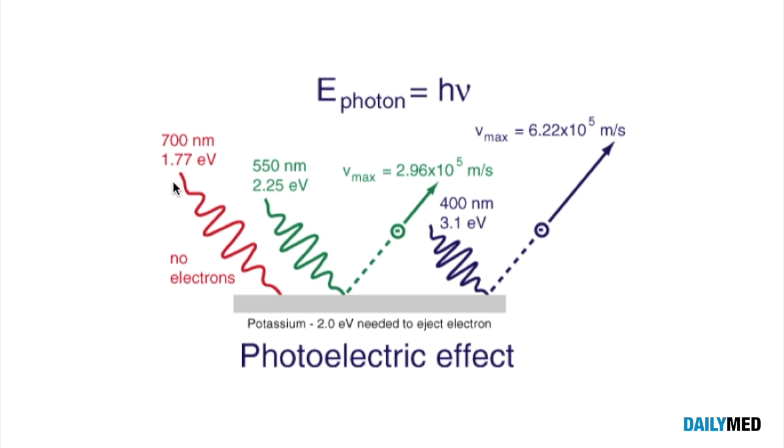The first one has 1.7 electron volts, the next one has 2.2, and the third one has 3.1. They all have different energies, and the energies are proportional to their wavelength, which we see here.